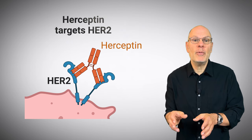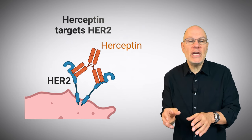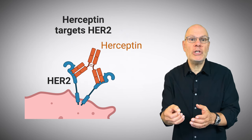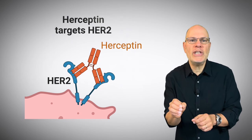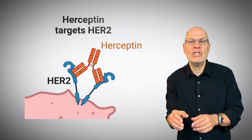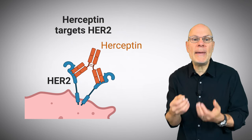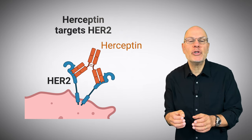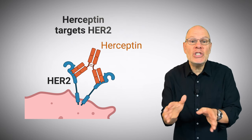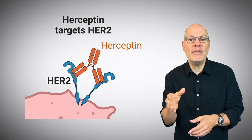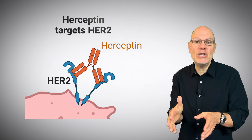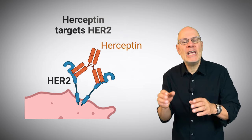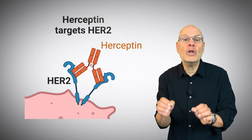Understanding how these signaling pathways work has set the stage for new cancer therapies. When the association between overexpression of HER2 and breast cancer was discovered, researchers had the idea that if a molecule could be developed that blocked the HER2 receptor, then the signaling pathway that HER2 stimulates could also be blocked. That's exactly what the anti-cancer drug Herceptin does — a bioengineered antibody that attaches to HER2 receptors and stops the signal rather than stimulating cell division. Herceptin, along with other HER2 binding antibodies, has been a key tool in fighting breast cancer for over 20 years.